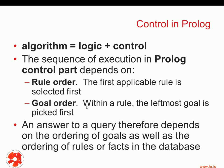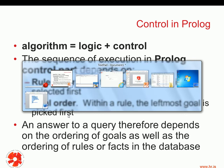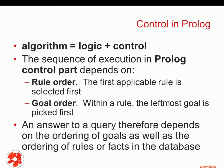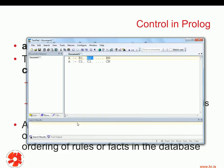Goal order means that within a rule, the leftmost goal is picked first. Assuming the first rule has been selected, we have a number of subgoals on the right-hand side, and it's the first subgoal that is selected first. Prolog first tries to prove B1; if B1 succeeds, it tries to prove B2, and so on. So an answer to a query depends on the ordering of goals as well as the ordering of rules or facts in the database.